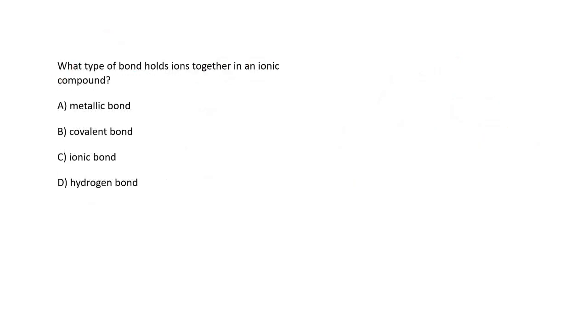Next question: What type of bond holds ions together in an ionic compound? An ionic compound is formed when two ions, one cation and one anion, combine together. Obviously their bond formation will be an ionic bond. So the right option is C, ionic bond.